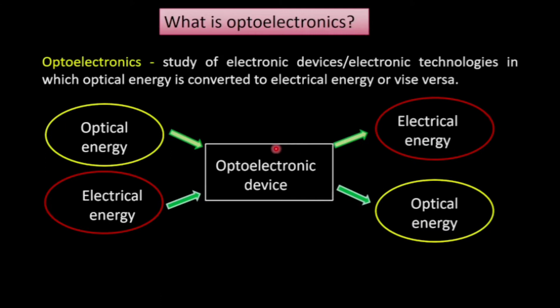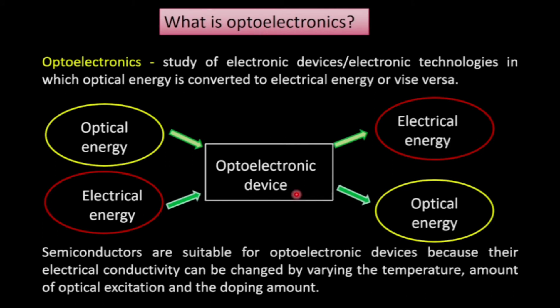For optoelectronic device design, semiconductors are found to be the most suitable material, because the electrical conductivity of a semiconductor can be changed by varying the temperature or the amount of optical excitation — that is, by applying energy to excite the electrons. Changing that excitation energy changes the electrical conductivity.